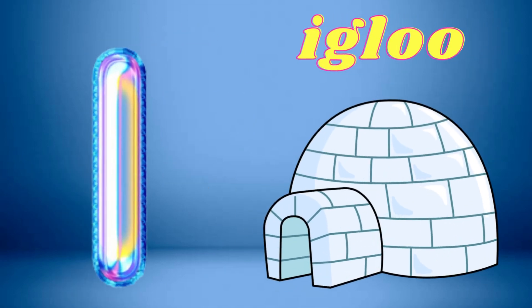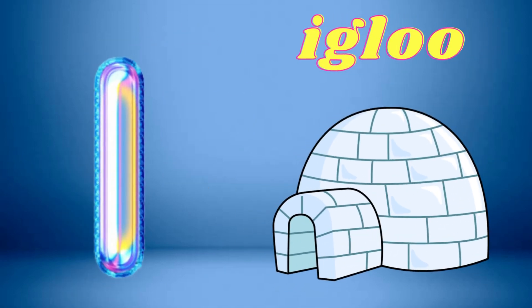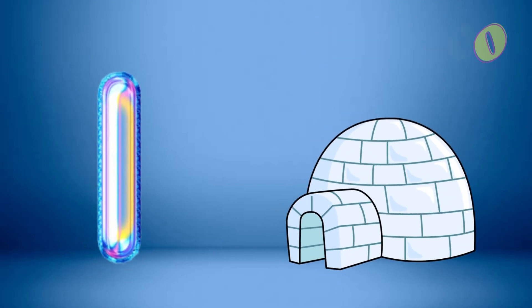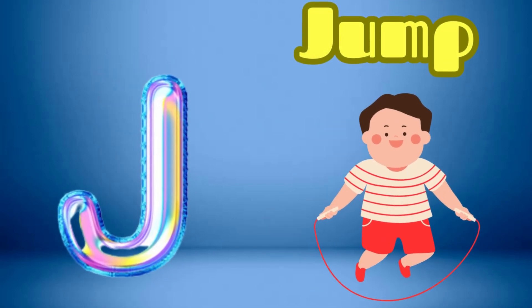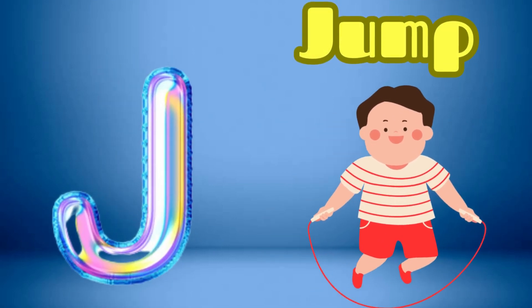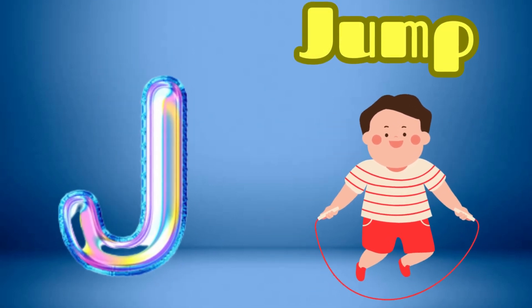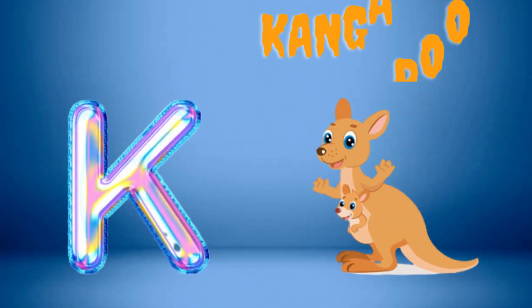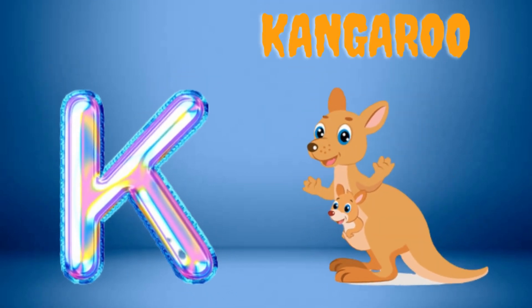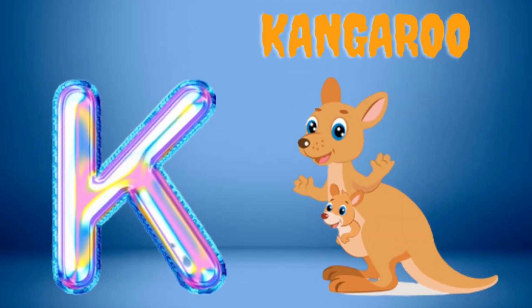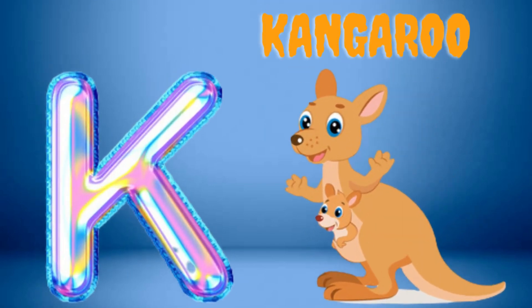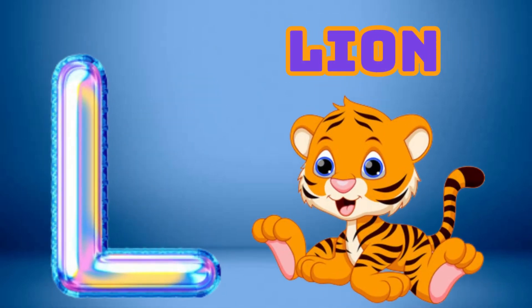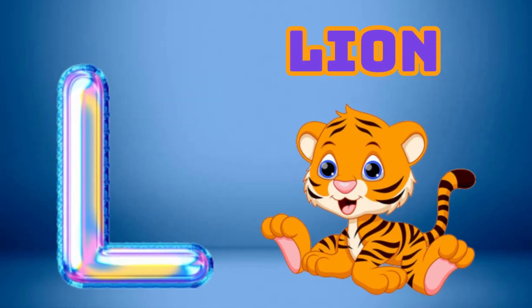I is for Igloo, I-I-Igloo. J is for Jump, J-J-Jump. K is for Kangaroo, K-K-Kangaroo. L is for Lion, L-Lion.